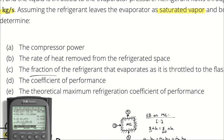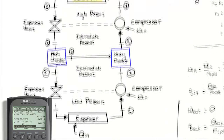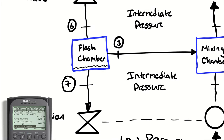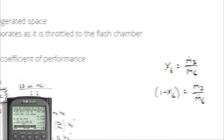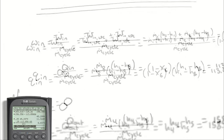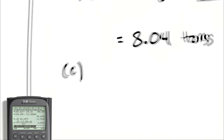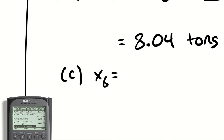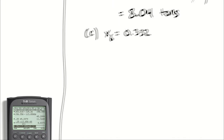Part C asks for the fraction of refrigerant that evaporates as it is throttled to the flash chamber. That is ṁ₃/ṁ₆, which is exactly the quality at state 6: x₆ = 0.3324.